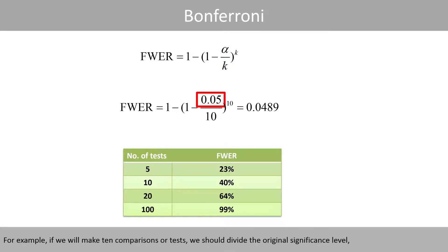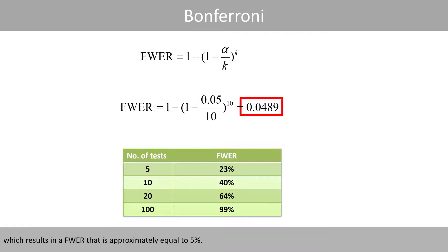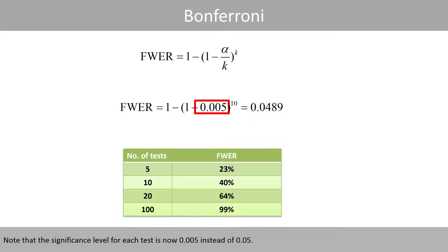For example, if we make 10 comparisons or tests, we should divide the original significance level by 10, which results in a family-wise error rate that is approximately equal to 5%. Note that the significance level for each test is now 0.005 instead of 0.05.